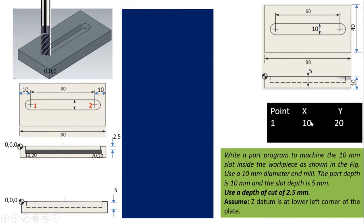So that's why X is written as 10. Then the Y position — you can see in this diagram this slot is at the center. The width given is 40, so half of that will be 20, meaning our center comes at 20. That's why my Y will be 20. So the first coordinate is X10, Y20.